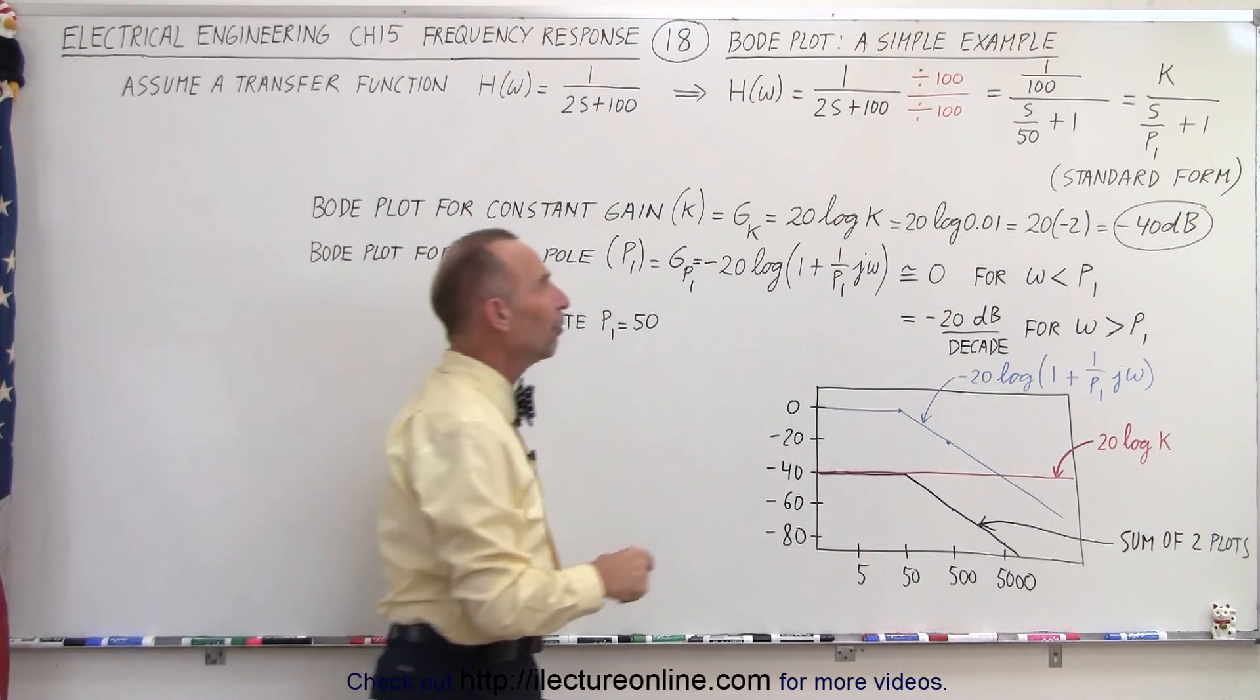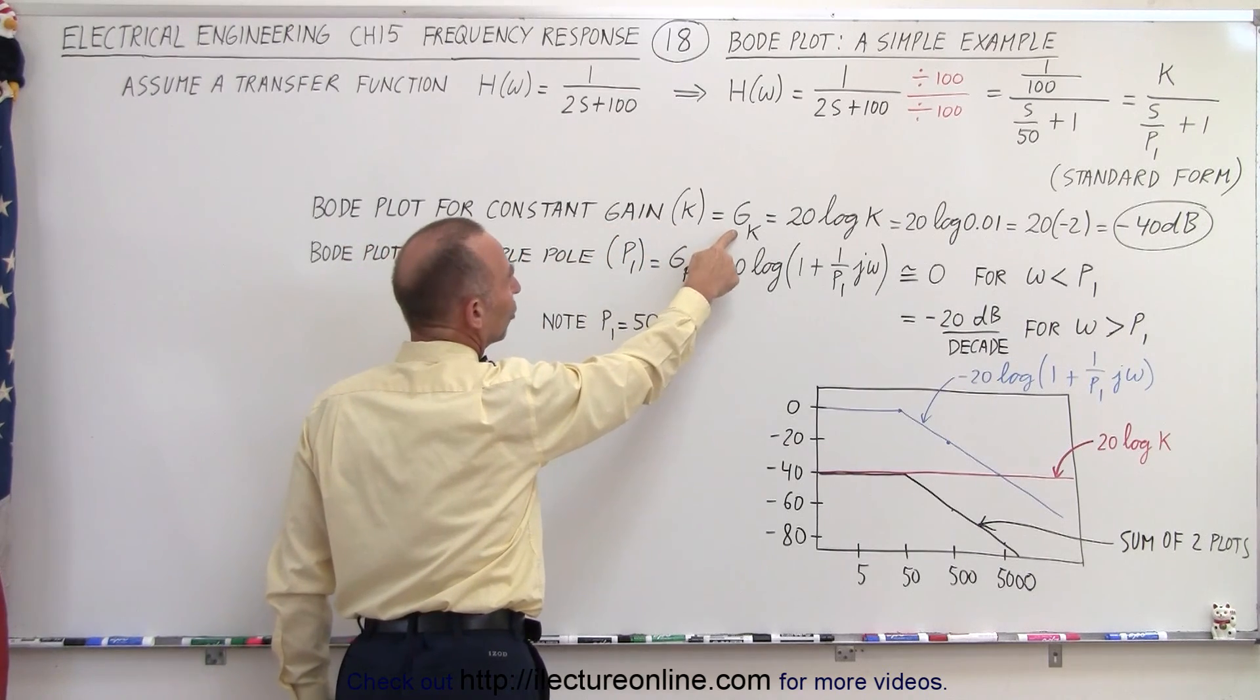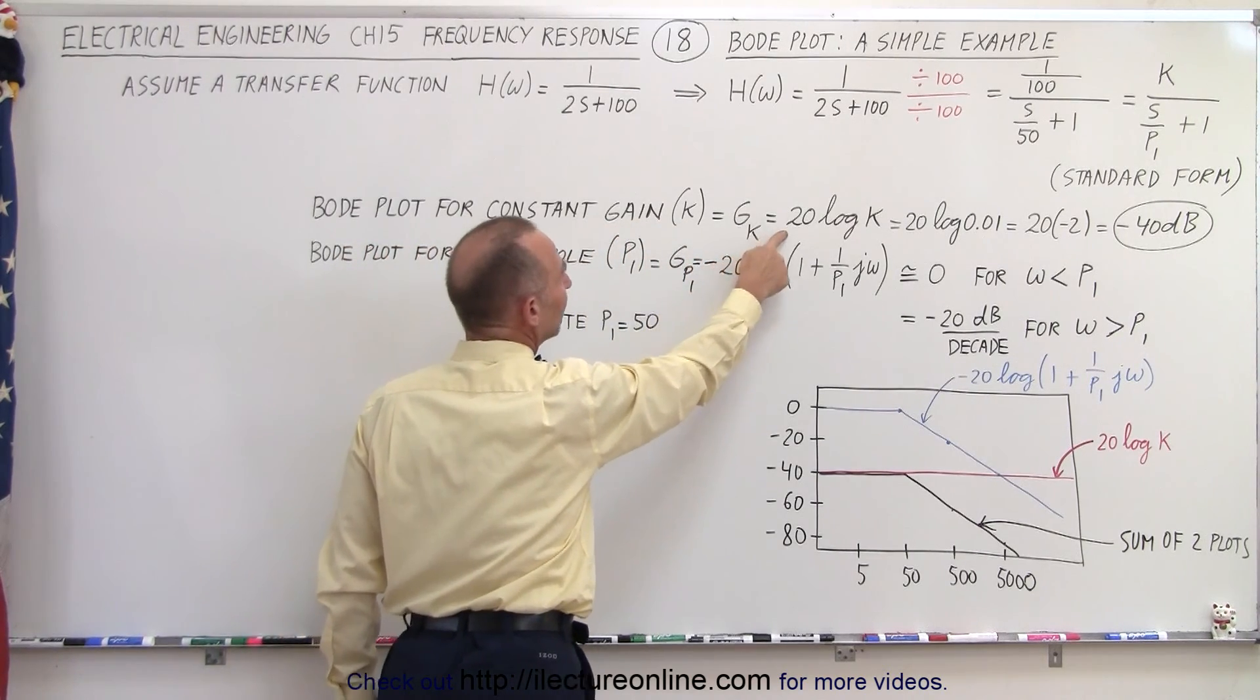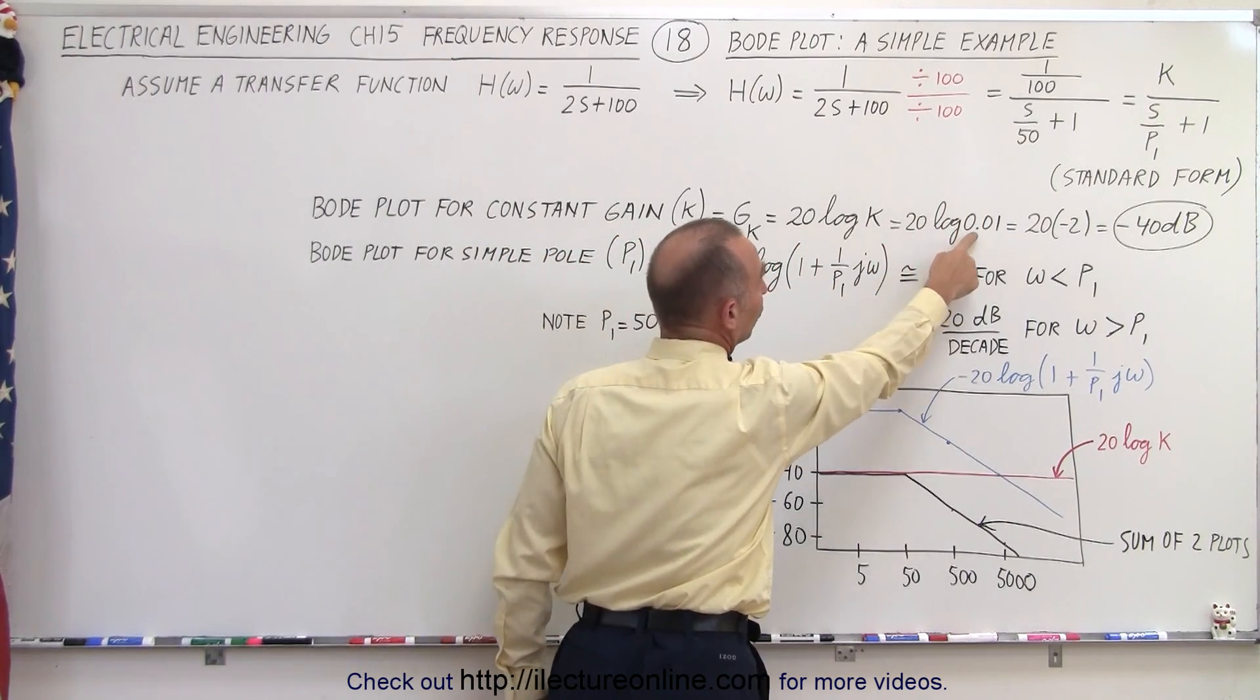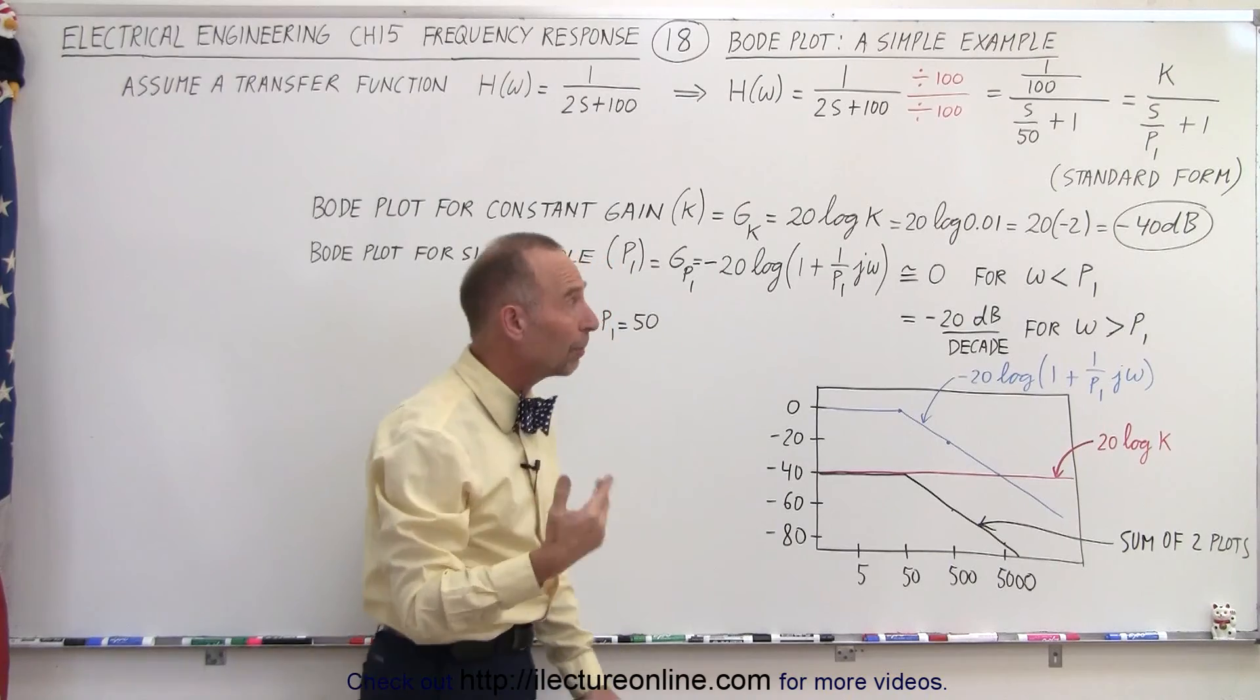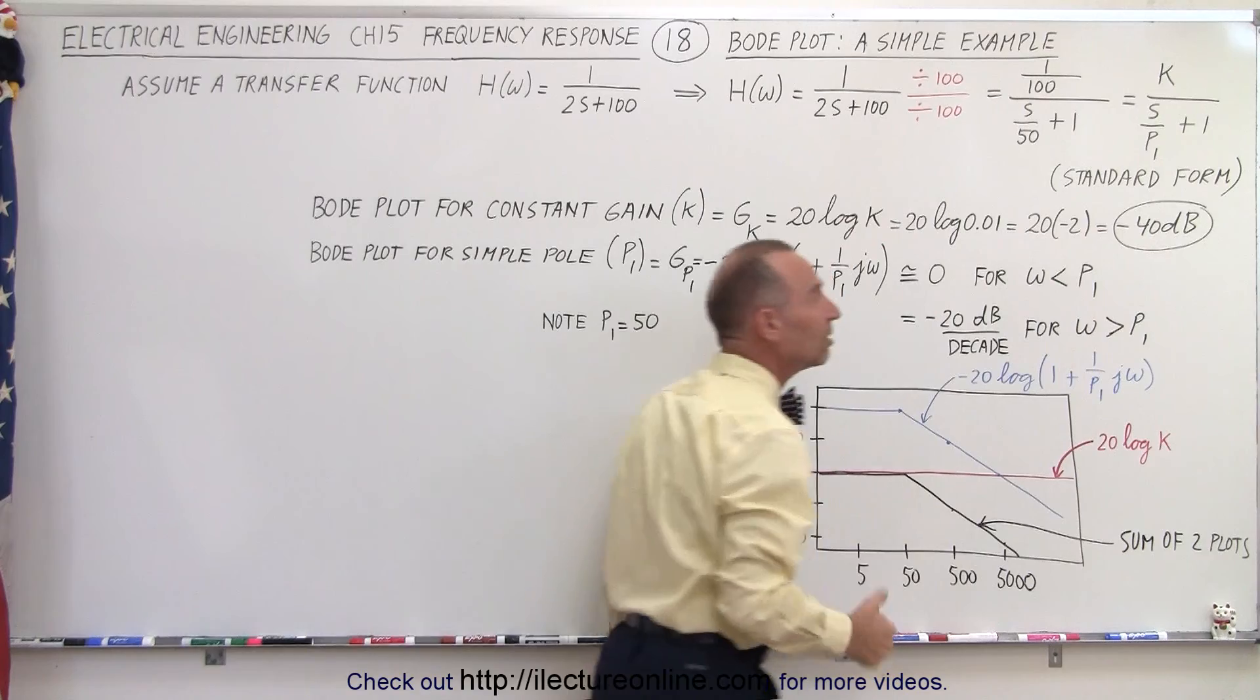Now first we're going to look at the factor called the constant gain. We'll call that K and so we'll call it G sub K which is simply 20 times the log of K. Now in this case K is 1 over 100 which is 0.01. The log of 0.01 is minus 2. Minus 2 times 20 is minus 40 dB.